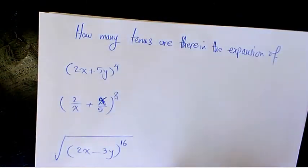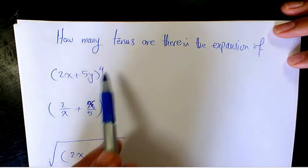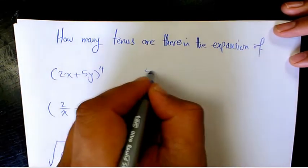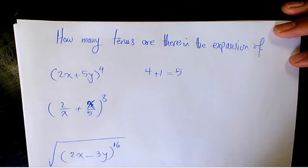If you go back in here, the first example is (2x+5y)^4. The index is 4 in this case, so the number of terms is going to be 4+1, which is 5. So we have 5 terms in total.